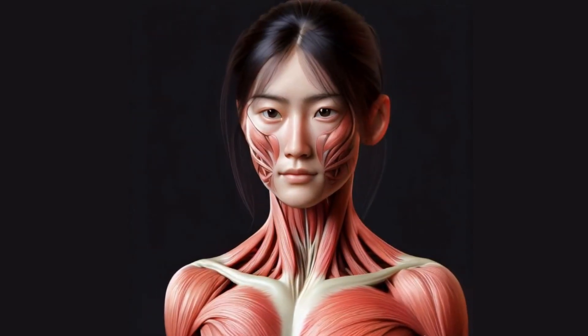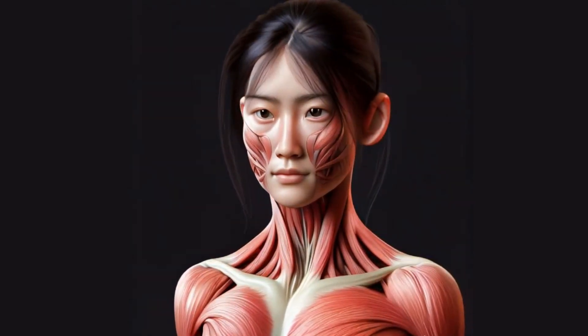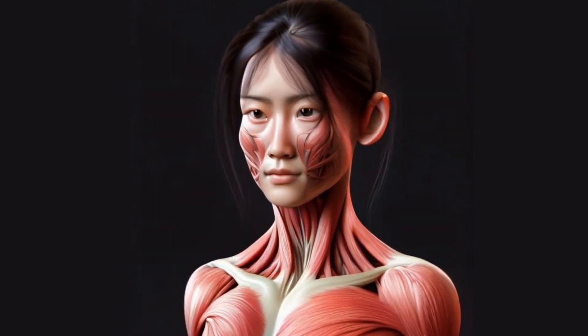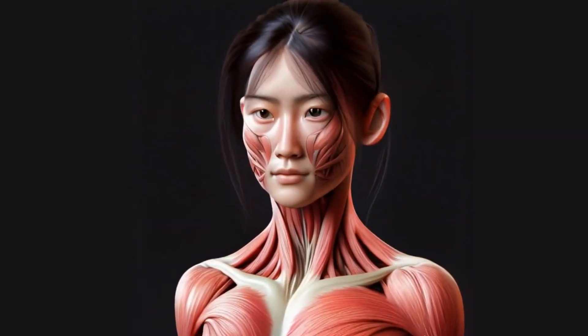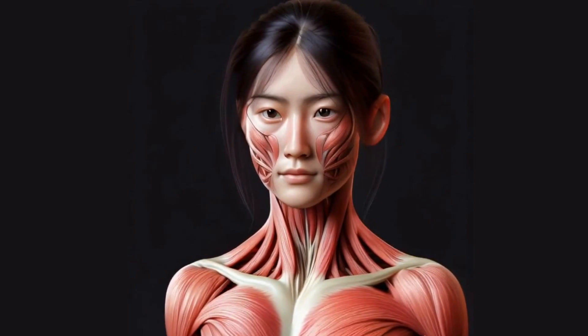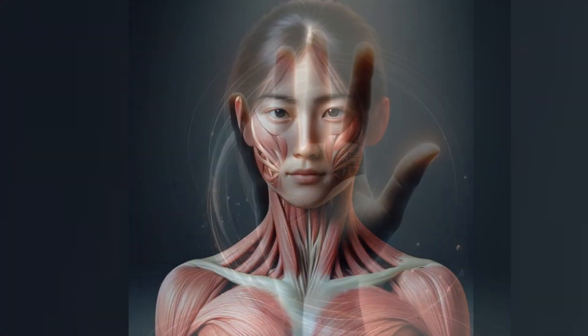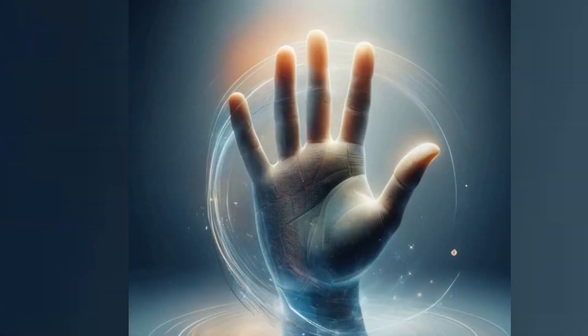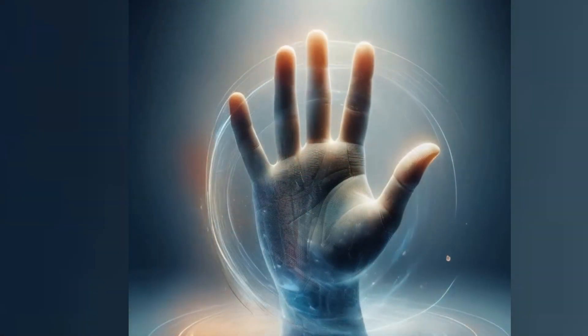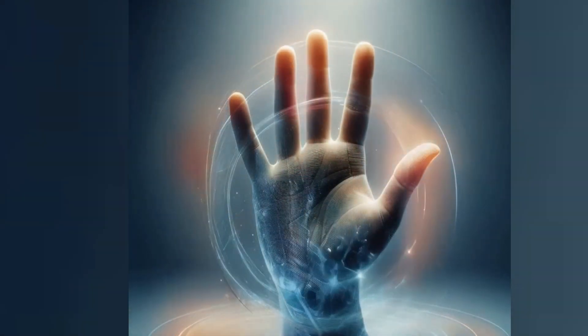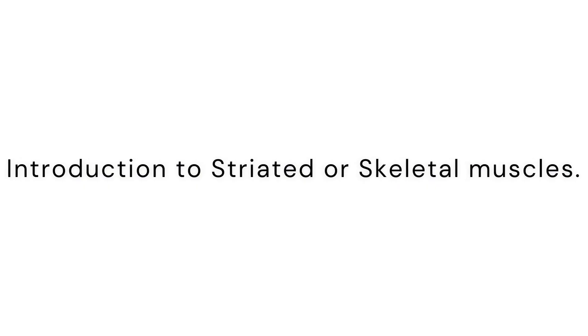Have you ever wondered how we are able to move our body voluntarily? How a thought can turn into a swift sprint or a gentle wave of the hand? It's a fascinating process that involves a special type of muscle in our bodies: the striated or skeletal muscle.